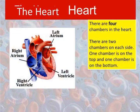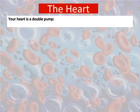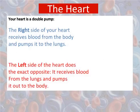There are four chambers in the heart — two chambers on each side, one on top and one on the bottom. Our heart is a double pump. The right side of your heart receives blood from the body and pumps it to the lungs, whereas the left side does the exact opposite: it receives blood from the lungs and pumps it out to the body.